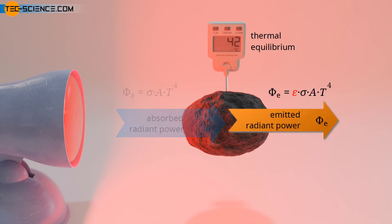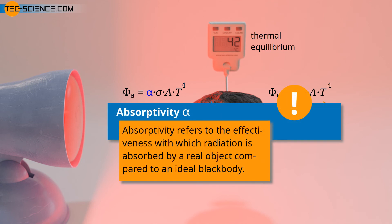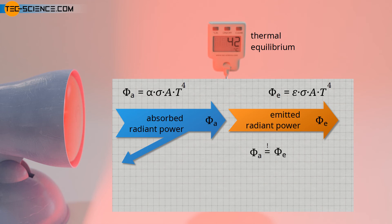Let us now consider a real body which has a lower radiant power than an ideal blackbody. As already explained, this is expressed by the emissivity. Furthermore, for real objects, a certain part of the incident radiation is reflected and not completely absorbed as in the case of blackbodies. Thus, the absorbed radiant power of a real body will be lower by a certain factor than that of an ideal blackbody. In analogy to the emissivity, this factor alpha describes the absorbed portion of the incident radiation and is referred to as absorptivity. The absorptivity refers to the effectiveness with which radiation is absorbed by a real object compared to an ideal blackbody. The radiation equilibrium between emitted and absorbed radiation applies to every body in thermal equilibrium, including non-ideal blackbodies. After all, a constant temperature and thus a thermal equilibrium will be reached for every object, in which emission and absorption must take place to the same extent.